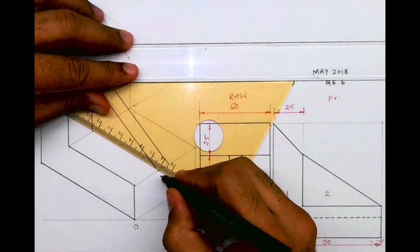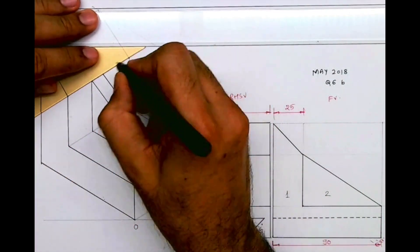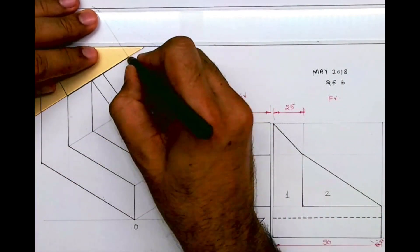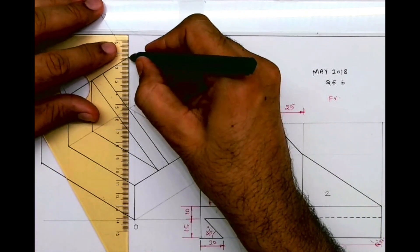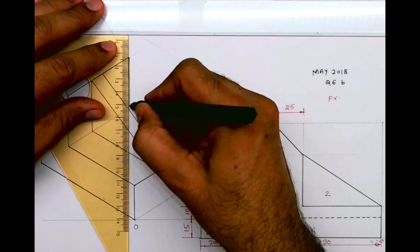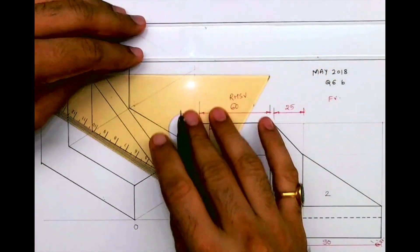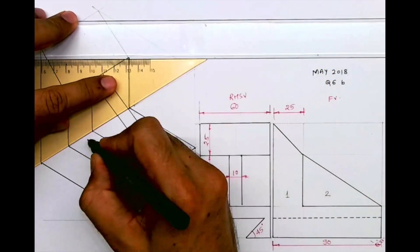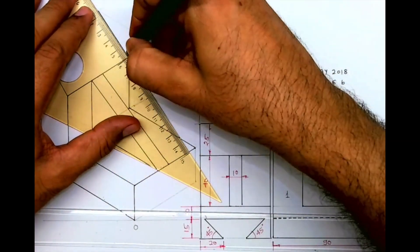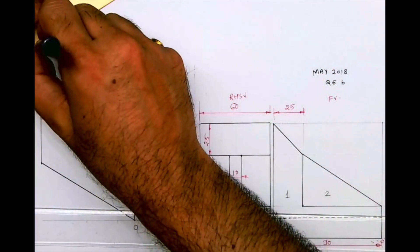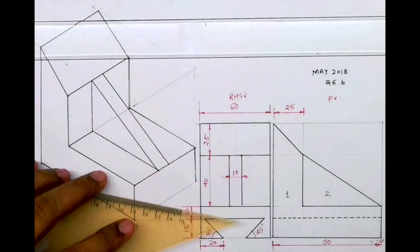See this. Now we are remaining with the slot. That slot is called a dovetail slot, so that we will draw. See this, all these lines will be down.